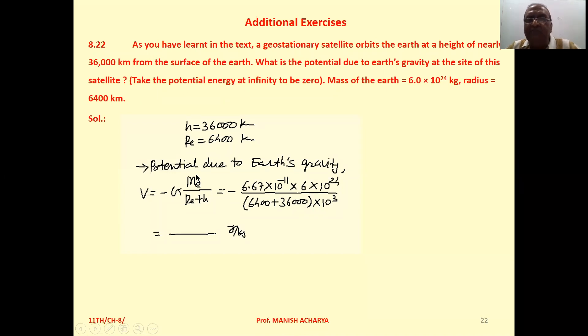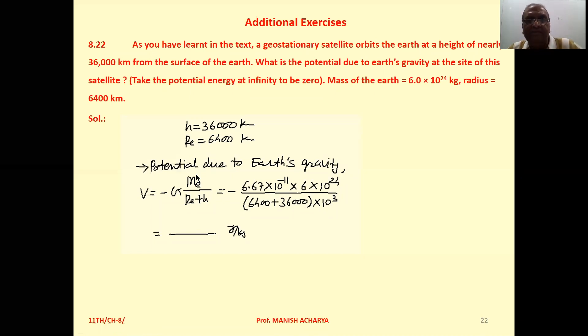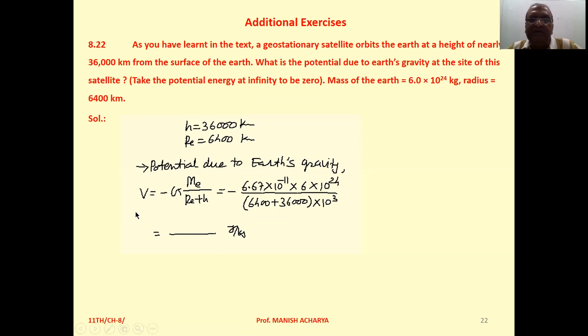Now, potential, that is V equal to minus GMₑ upon Rₑ plus H at height H. Simple. Substitute the values of GMₑ and Rₑ and H and then solve it. You will get the potential.